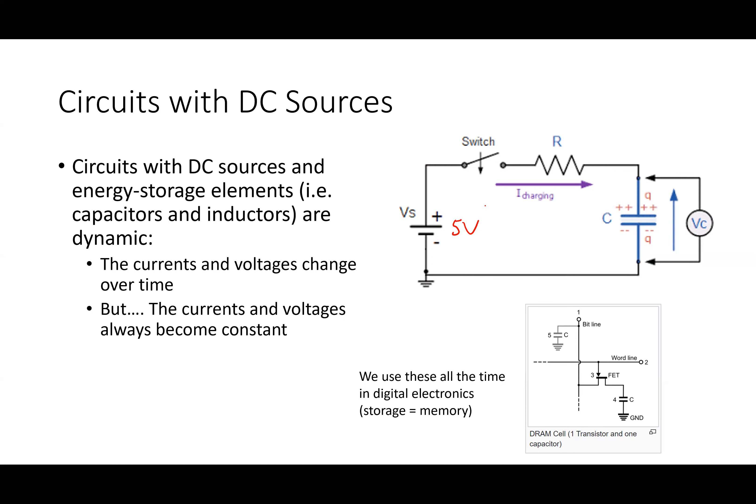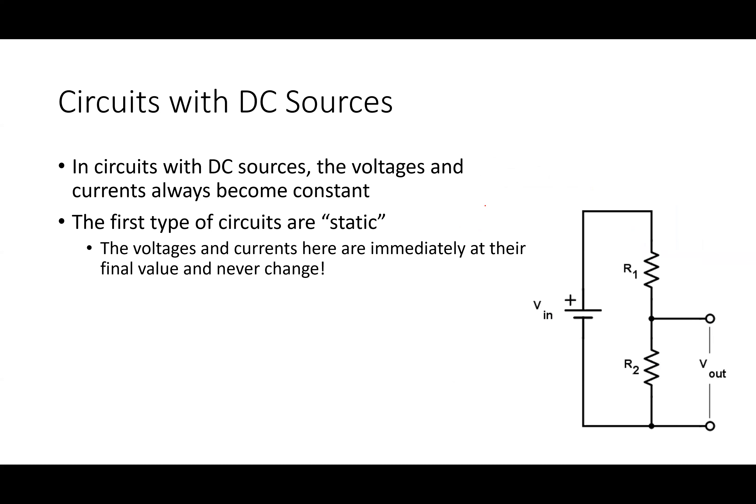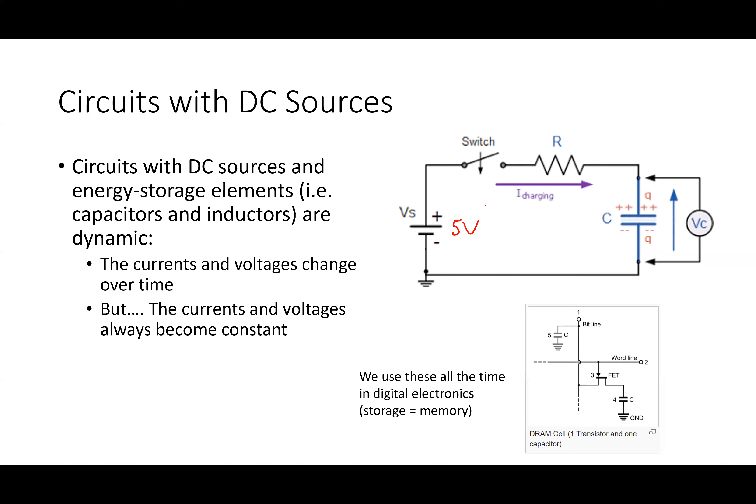The currents and voltages in these circuits change over time — they always become constant eventually, but they follow an exponential path. In a static resistor circuit, everything is the same from t=0 to infinity. But in an RC circuit, there's a transient pathway from the initial state to the final state. Why do we call this a first-order circuit? Because it has one storage component, meaning one exponential in the response.